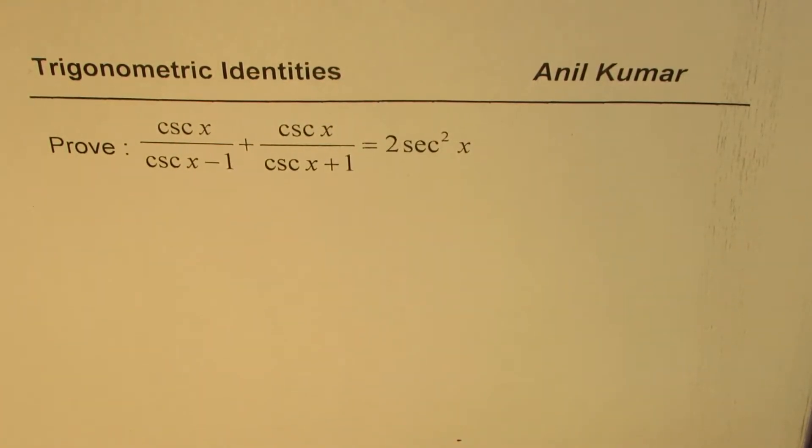I am Anil Kumar. In this video, we will prove the identity cosecant x divided by cosecant x minus 1 plus cosecant x divided by cosecant x plus 1 equals to 2 times secant square x.